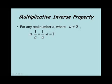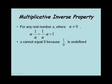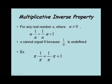Next, we'll look at the multiplicative inverse property, which says for any real number a, where a is not equal to 0, a times 1 over a equals 1 over a times a, which equals 1. Note that a cannot equal 0, because 1 over a would be 1 over 0, which is undefined. For example, pi times 1 over pi equals 1 over pi times pi, which equals 1.